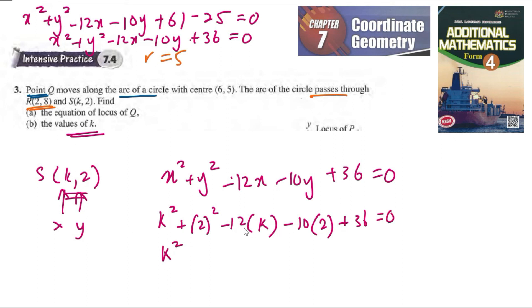We get k². This one will be minus 12k. So 4 minus 20 is negative 16, plus 36 plus 20 is plus 20, is equal to 0.